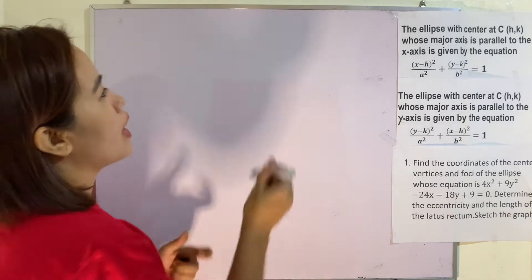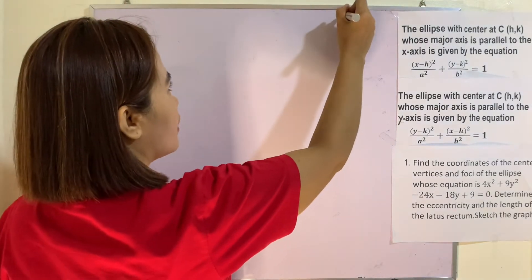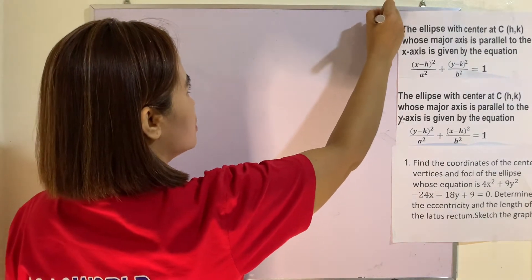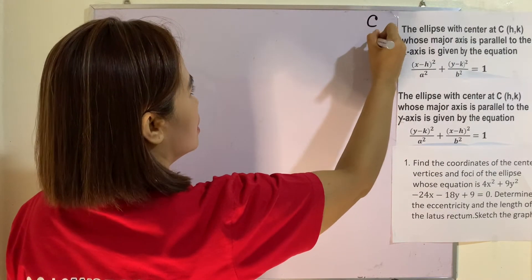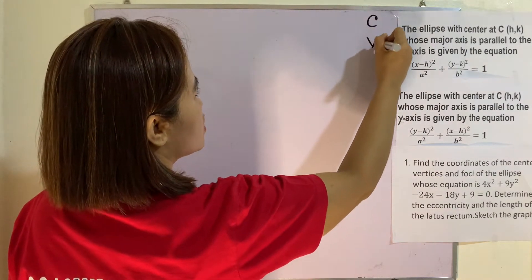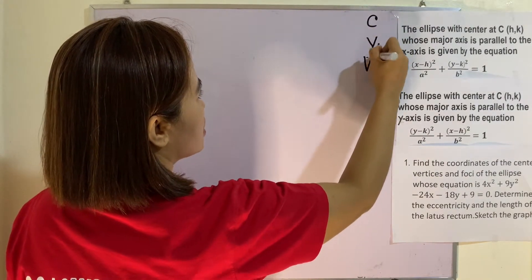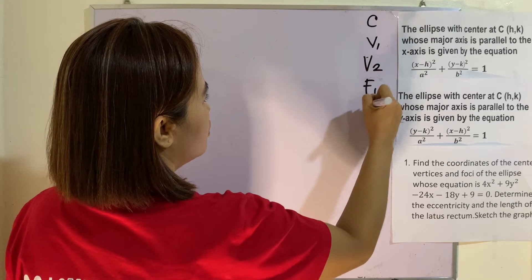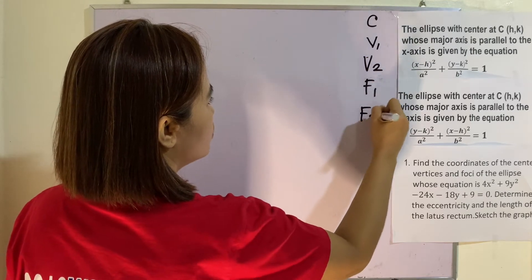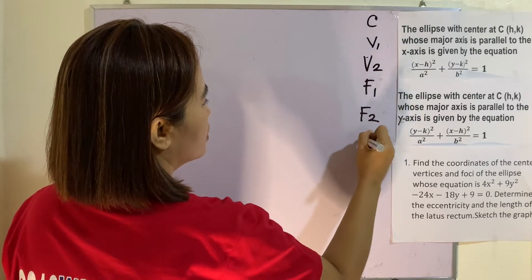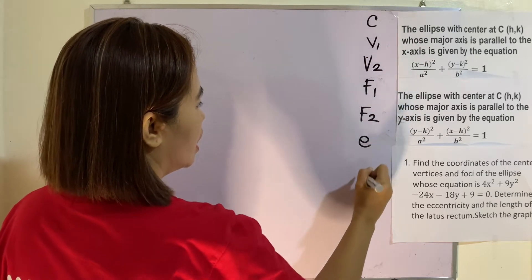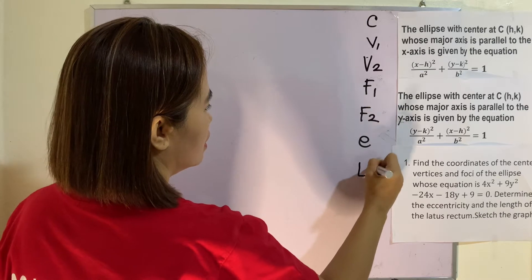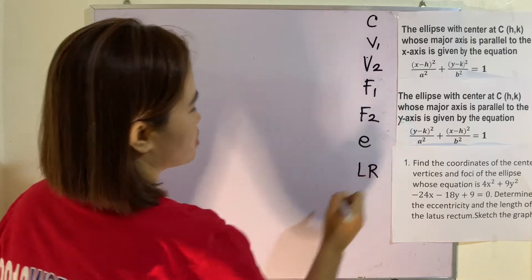Sketch the graph. So we will be finding the center, vertex 1, vertex 2, foci 1, foci 2, the eccentricity e, and then the latus rectum.